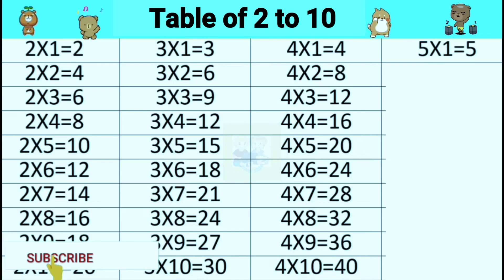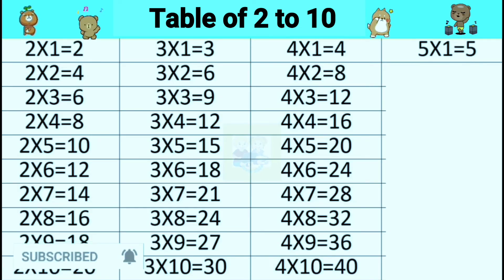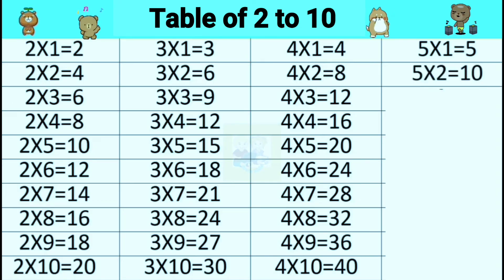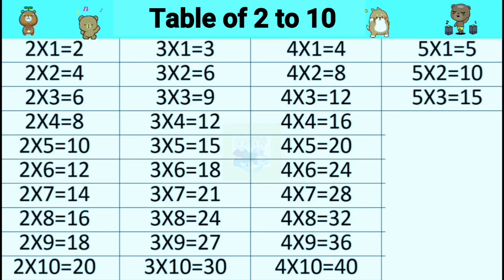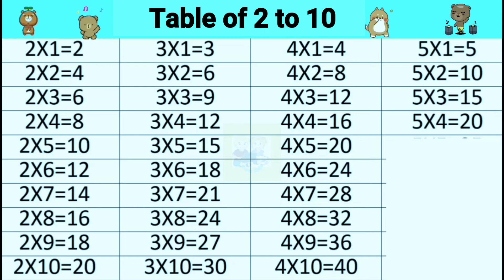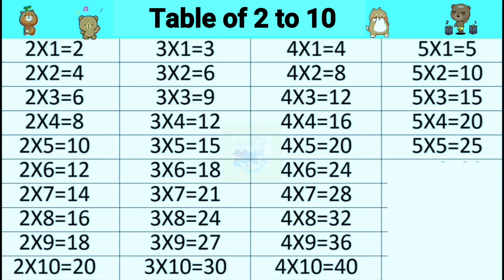Table of five. Five ones are five. Five twos are ten. Five threes are fifteen. Five fours are twenty. Five fives are twenty-five.